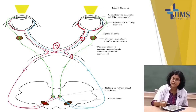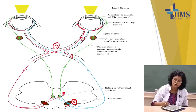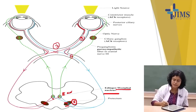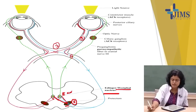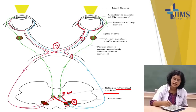From the pre-tectal area — this is the fifth step — it will go to the Edinger-Westphal nucleus. Here you can see there is bilateral supply from the tectum; one fiber goes to each side. From the Edinger-Westphal nuclei, the pre-ganglionic parasympathetic fibers arise and end in the ciliary ganglia.